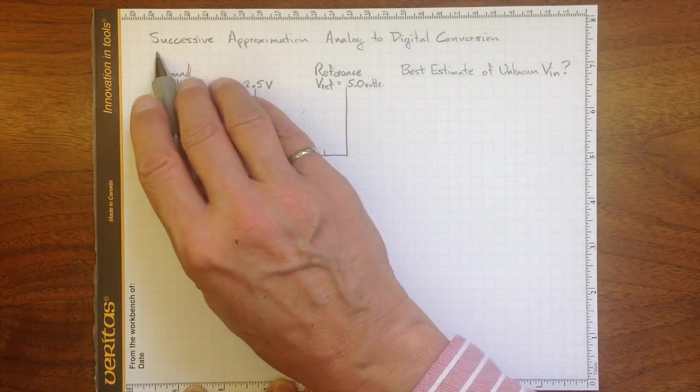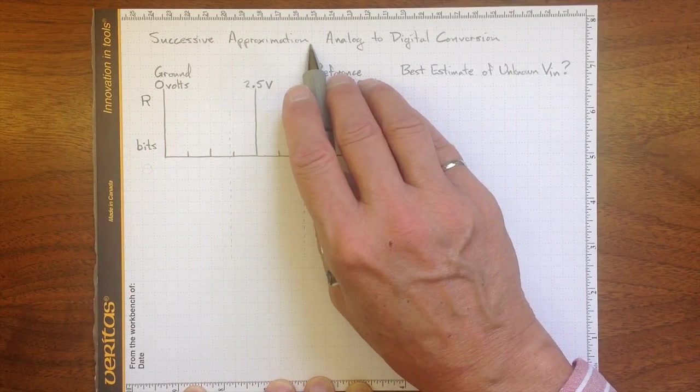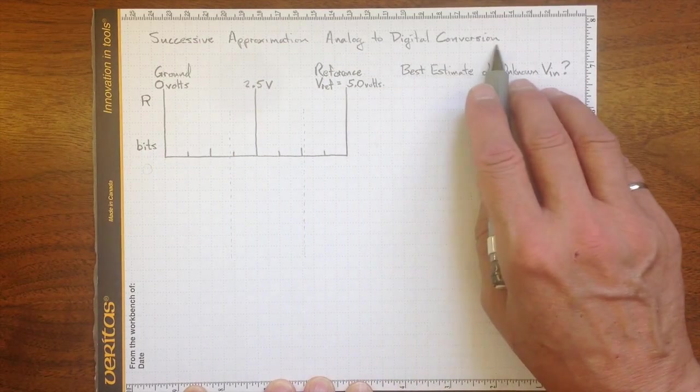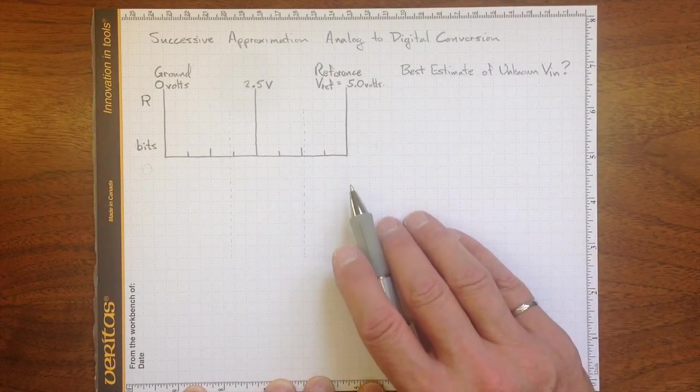Most systems use a successive approximation algorithm to convert those analog voltages to digital values. I'm going to outline how that works.